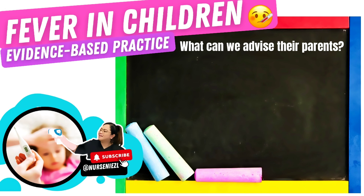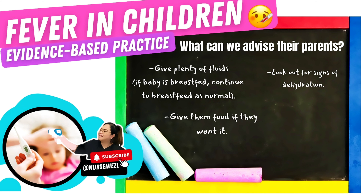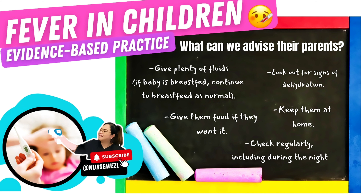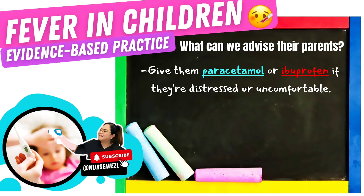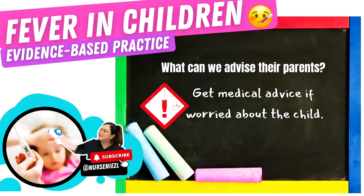As nurses, what can we advise the parents or carers? We have to give them plenty of fluids. If the baby or child is still breastfed, continue to breastfeed as normal. Look out for signs of dehydration, give them food if they want it, check on the child regularly including during the night, and keep them at home. Give them paracetamol or ibuprofen if they are distressed or uncomfortable — make sure to check the packaging to ensure the medicine is suitable for the child, or speak to a pharmacist or GP if unsure. Most of all, seek medical advice if worried about the child.